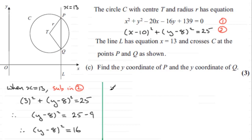That means then we're therefore going to have y - 8 equals the square root of 16. But don't forget that when we take a square root, it can be plus or minus.